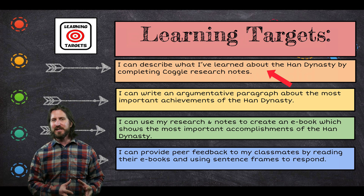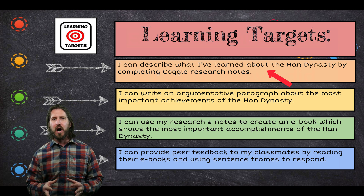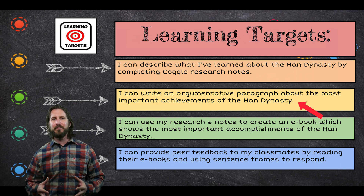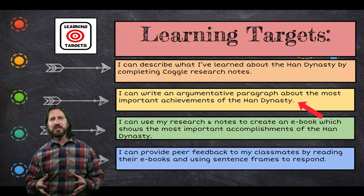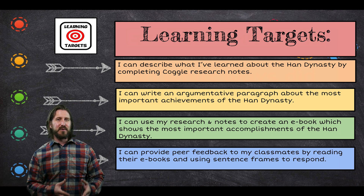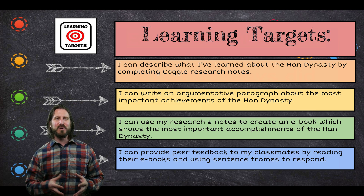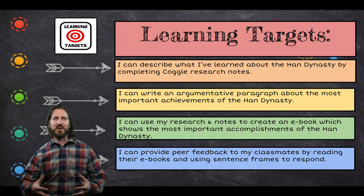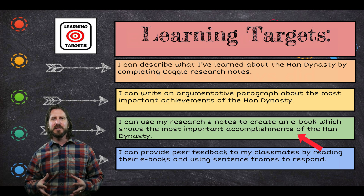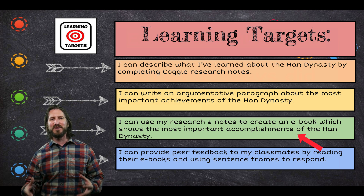In this lesson plan, students will be researching about the Han Dynasty and then using a program called Coggle in order to take notes. Then they'll be applying their knowledge by drafting an argumentative paragraph about which Han Dynasty achievements they believe are the most important. Students will also be using a program called Book Creator to create digital books that they can then share in a class library for the rest of their classmates to see.